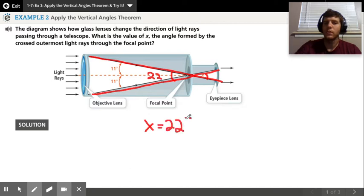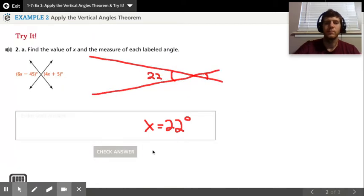To help you out with your first try-it problem: we have vertical angles here. We have two lines intersecting, so they're forming vertical angles on each side. In this case, your two vertical angles are congruent, so that means their measures are equal.